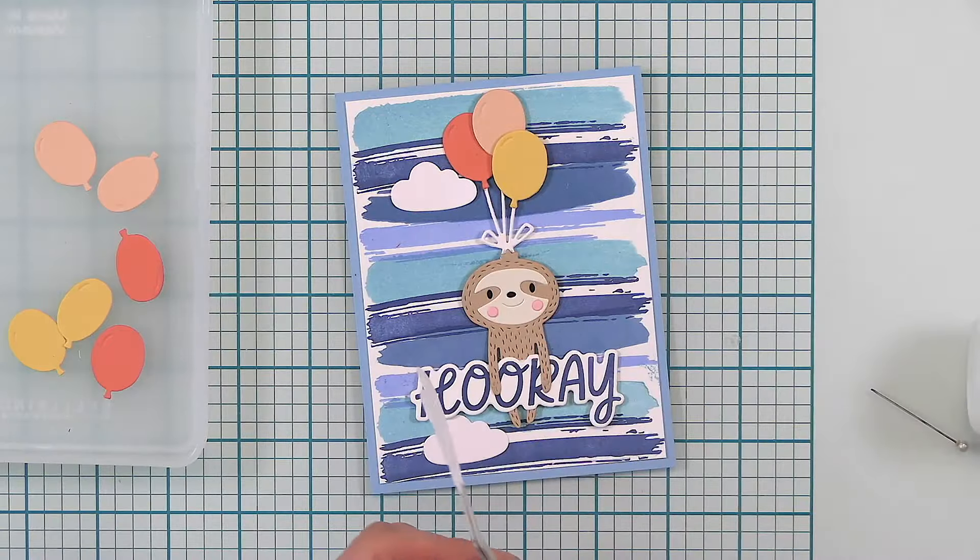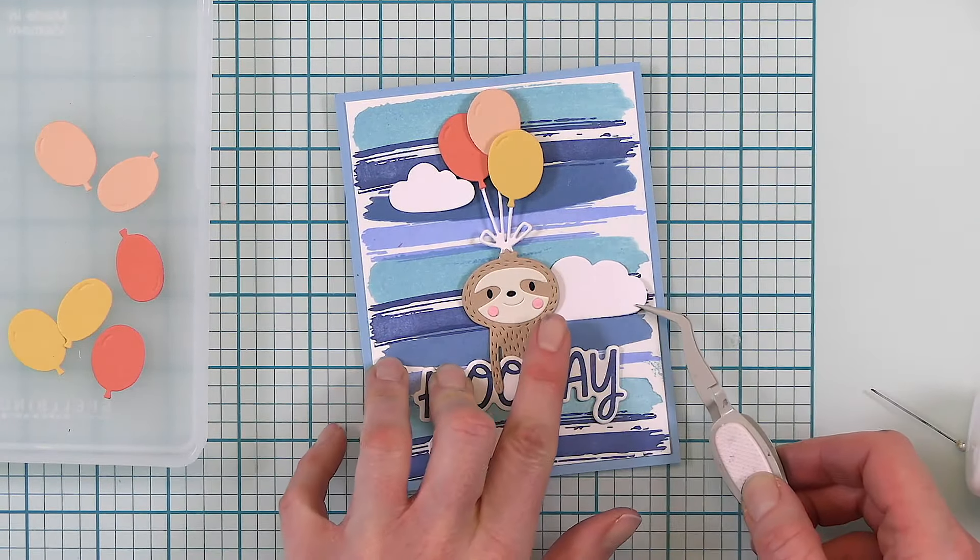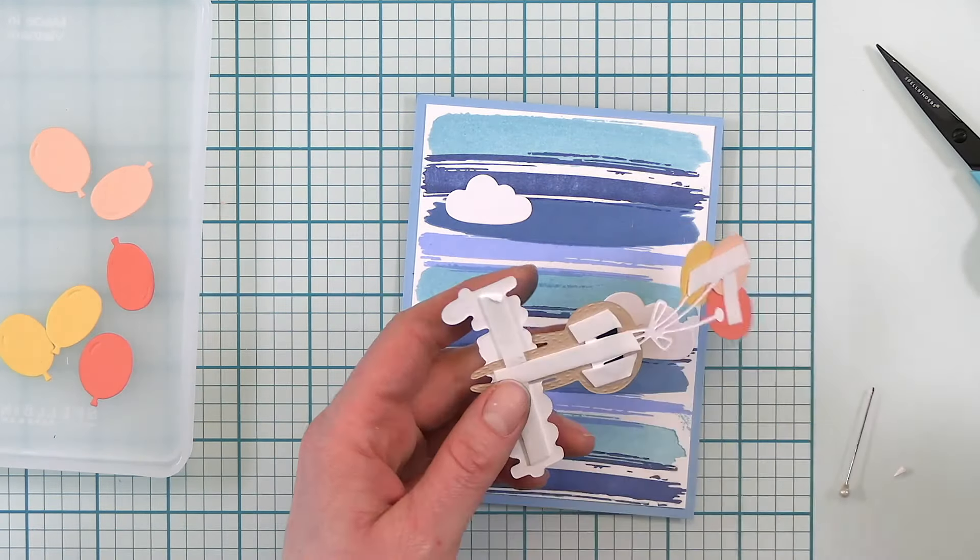And having a triangle of three clouds makes my sloth stand out more since he's in the center of that triangle.